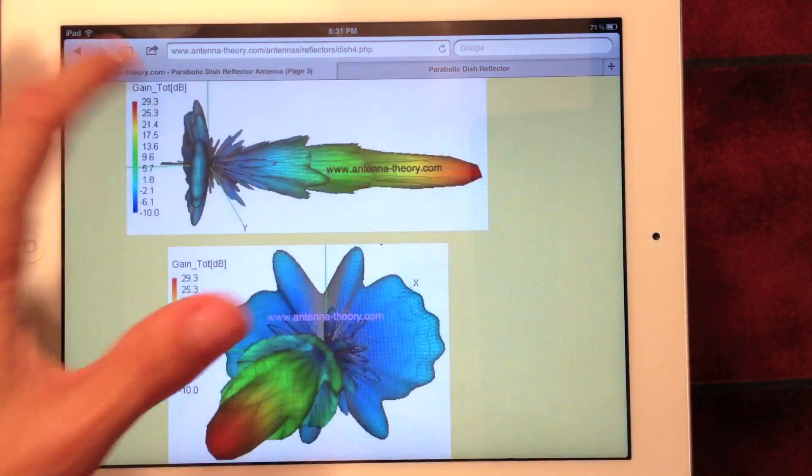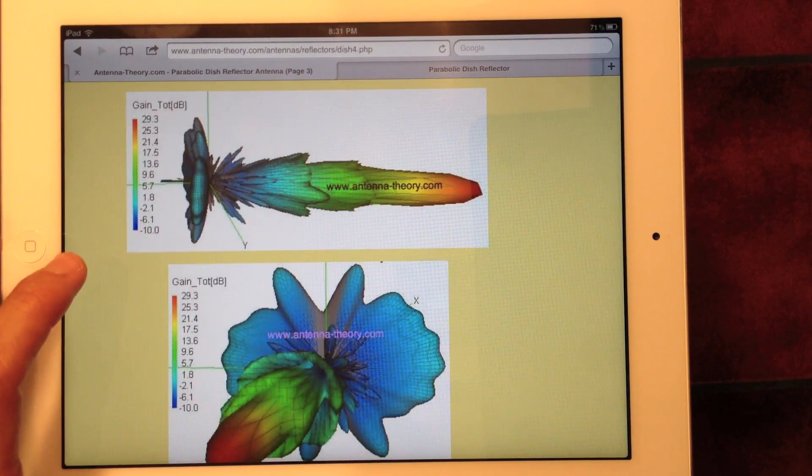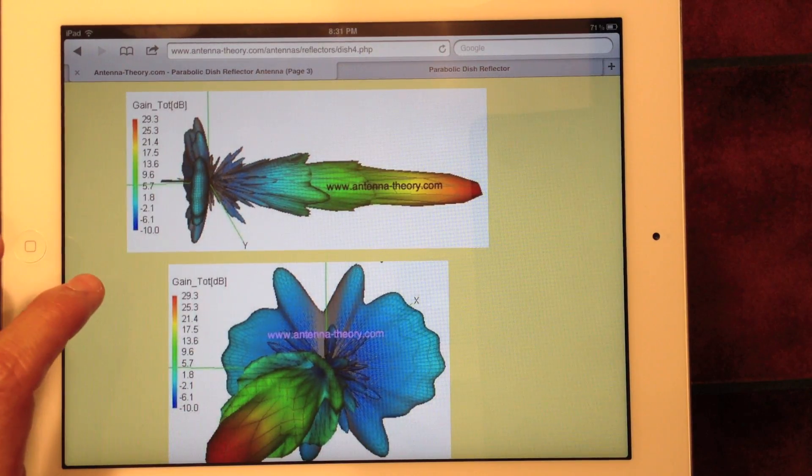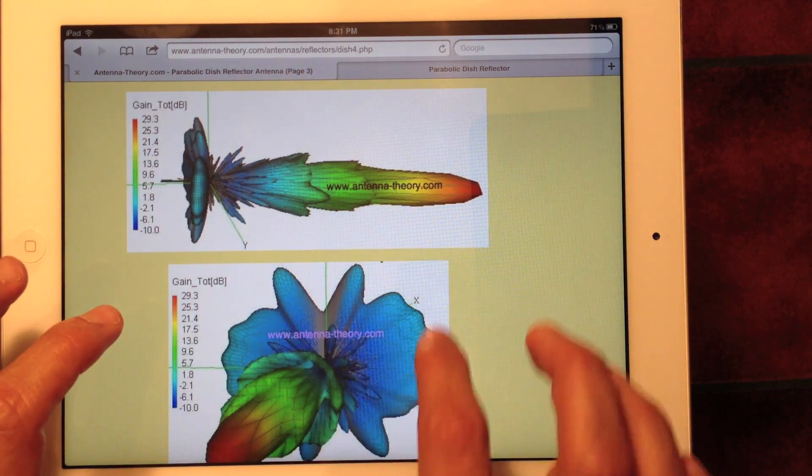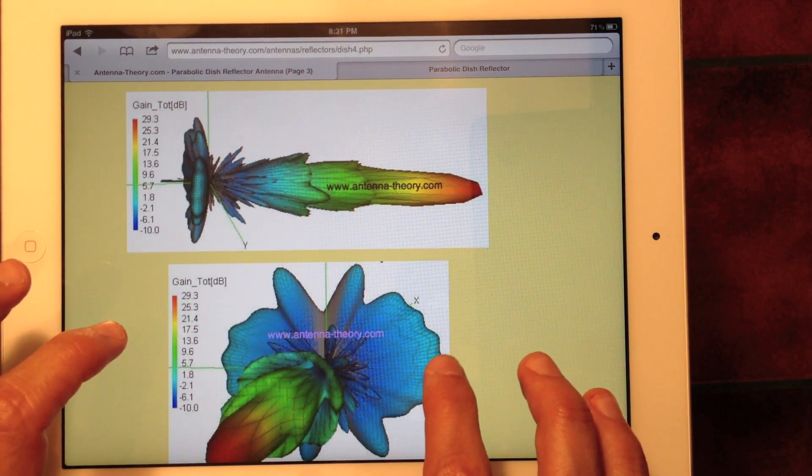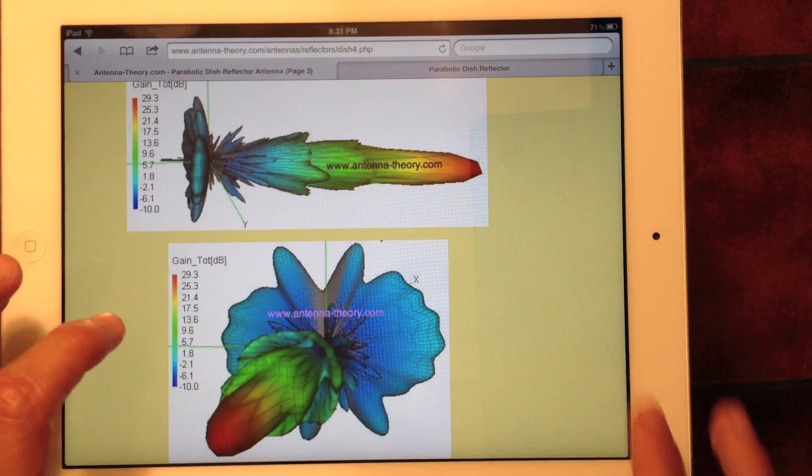So the radiation patterns, here are some examples. This is a dish antenna with a gain of about 30 dB, and in this case the side lobes, which is the energy coming out here, is about 40 dB lower than the energy that comes out of the peak or main beam.